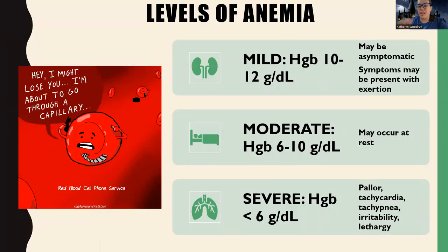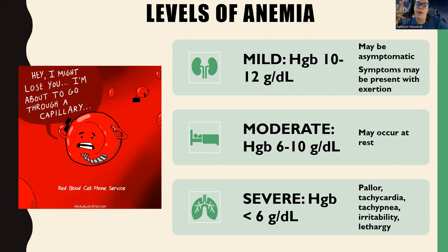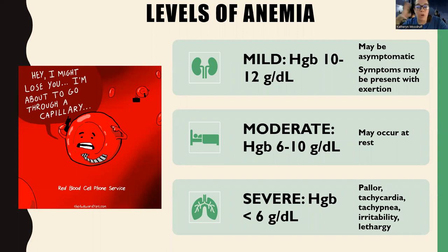There are different levels of anemia. I don't want you to get too caught up on this — we're not going to test you on exact hemoglobin values and specific symptoms, because they can vary. Some people can live at a hemoglobin of six and feel great, while others are at a hemoglobin of 10 and say they can't breathe. A good way to remember normal hemoglobin is somewhere around 12 to 16 — it's different for men versus women — but 12 to 16 gives you a good range to consider.